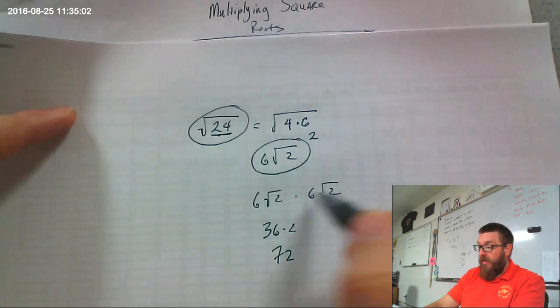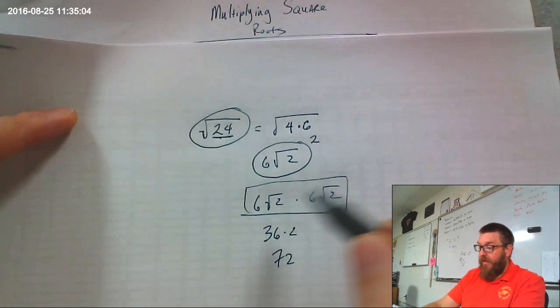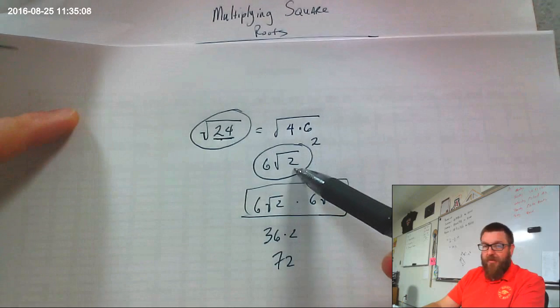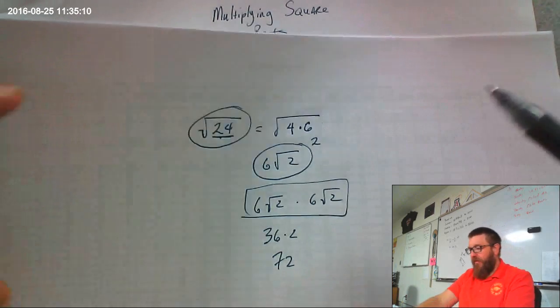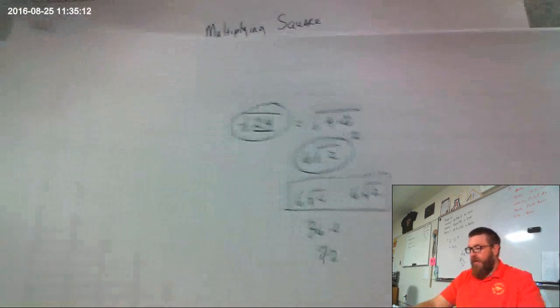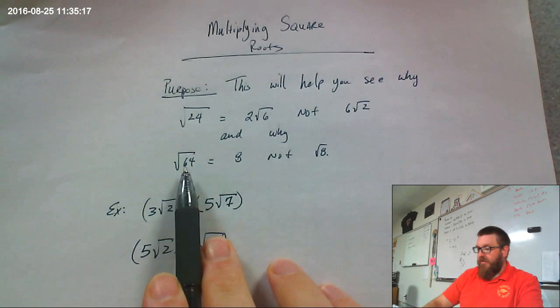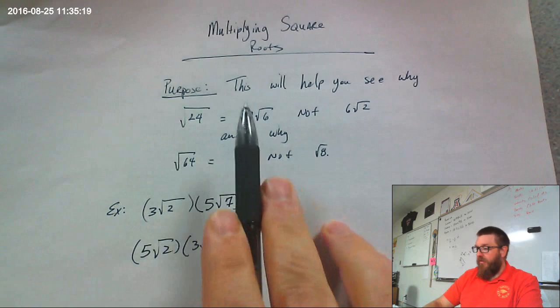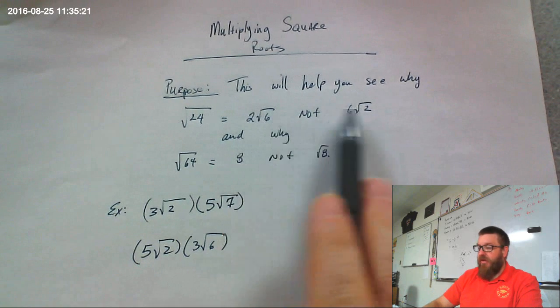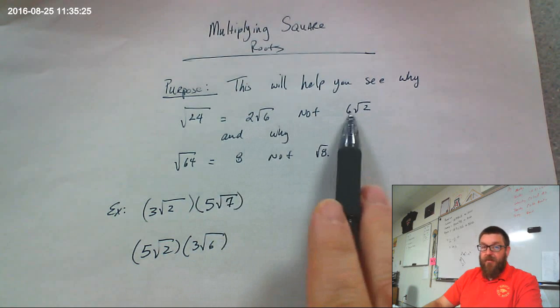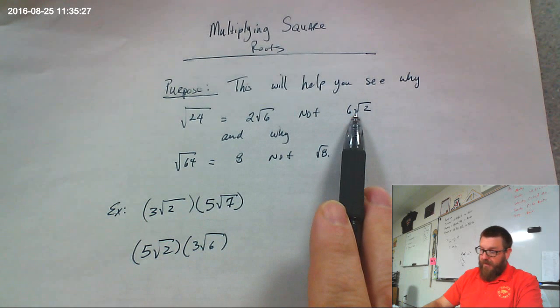So what I'm going to show you in this video is how you multiply irrational numbers together in the hopes that you'll understand why this is wrong. So that's the whole purpose of this video. So again, I want people to understand that the square root of 24 is 2 root 6, not 6 root 2. Those are totally different things. This number times itself is 24, but this number times itself is 72.